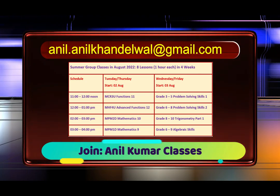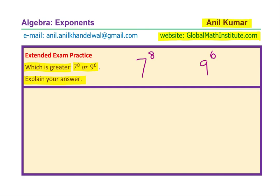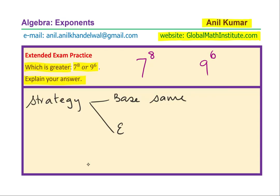Now let us see the solution of the question. Let us try to analyze the situation. How do you compare the numbers with exponents? Well, the strategy is simple: to either make the base same, or to make the exponents same.